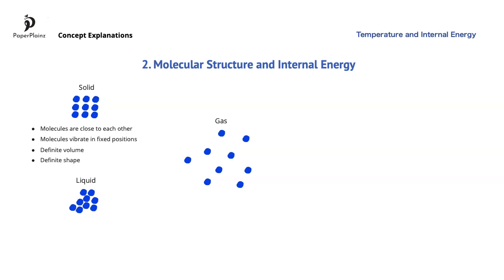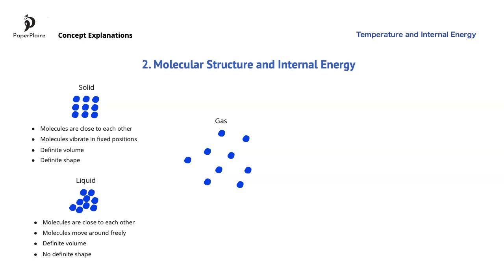Molecules in a liquid are also close to each other, but they are free to move around. You can imagine these molecules as millions of small balls rolling around on top of each other in a cup or a box. While a liquid has a definite volume, it has no definite shape. For example, you cannot easily compress water into a smaller volume, but you can easily change its shape by pouring it into different containers.